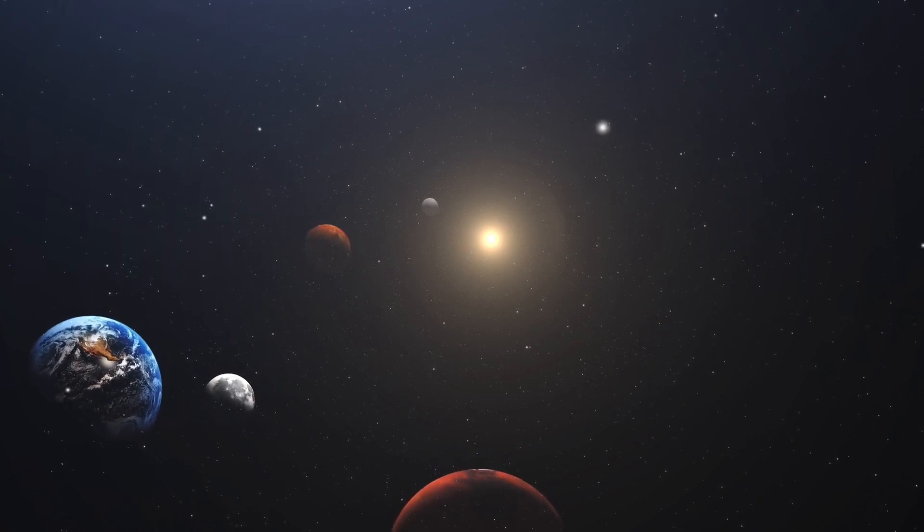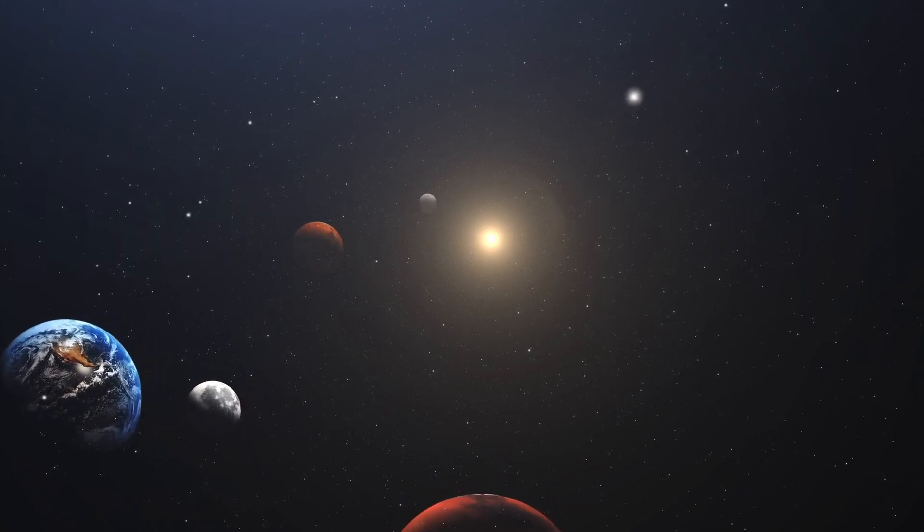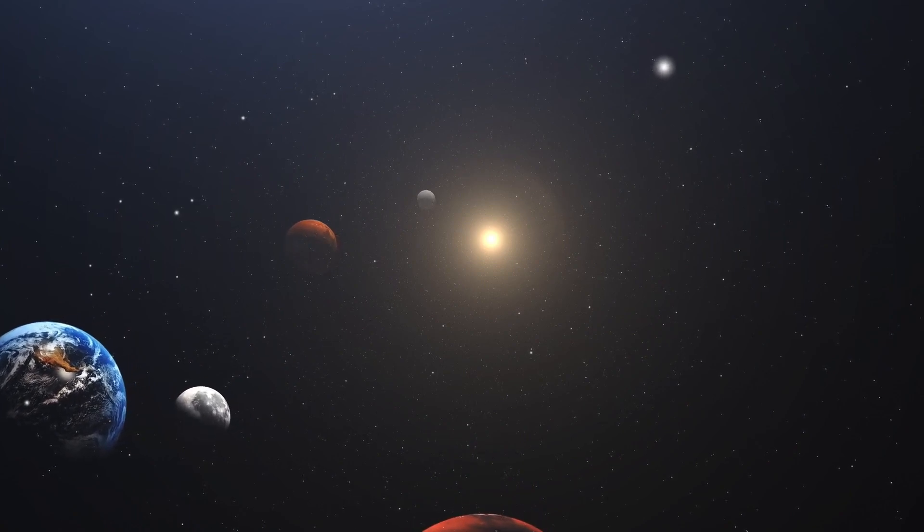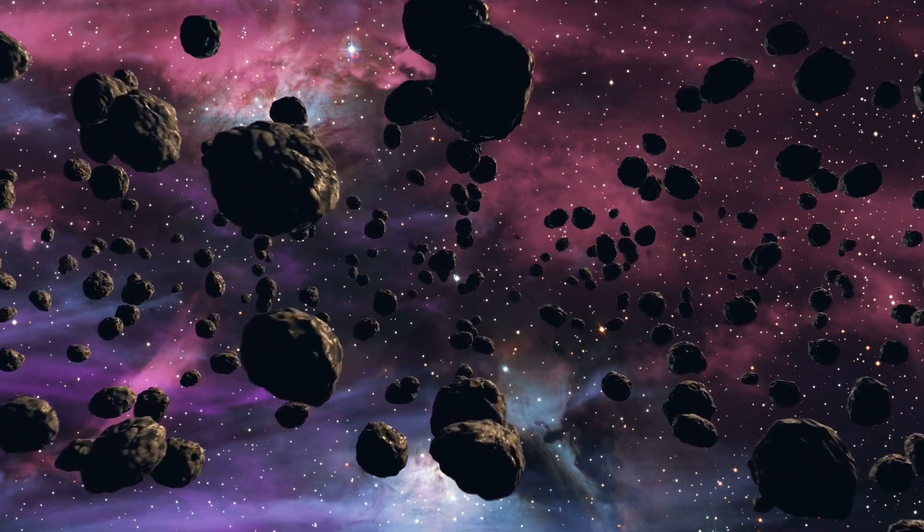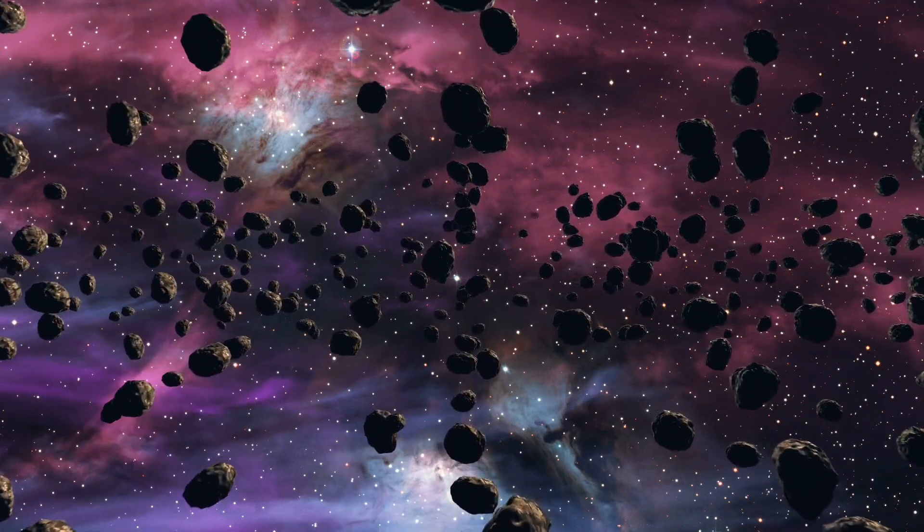Jupiter has 318 times Earth's mass and Saturn is 95 times Earth's mass. Together, Jupiter and Saturn hold 92 percent of the total planetary mass in the solar system.